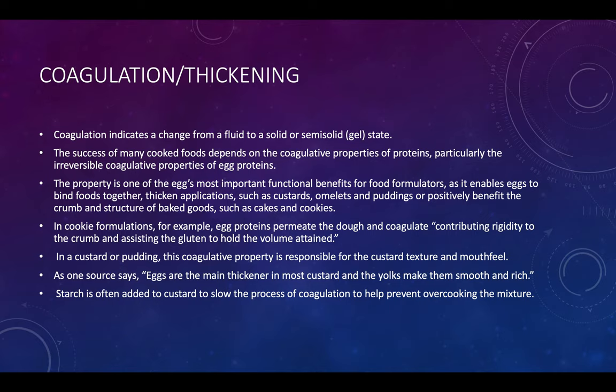Coagulation or thickening: coagulation indicates a change from a fluid to a solid or semi-solid gel state. The success of many cooked foods depends on the coagulative properties of protein, particularly the irreversible coagulative properties of egg protein — one of the egg's most important functional benefits for food formulators. It enables eggs to bind foods together. Thickening applications such as custards, omelets, and puddings positively benefit from this property, and it improves the crumb and structure of baked goods such as cakes and cookies. In cookie formulation, for example, egg proteins permeate the dough and coagulate, contributing rigidity to the crumb structure.